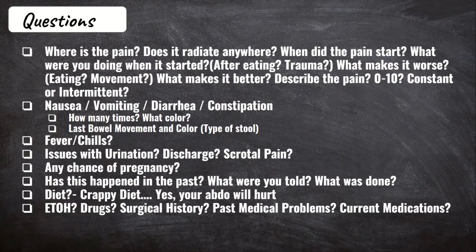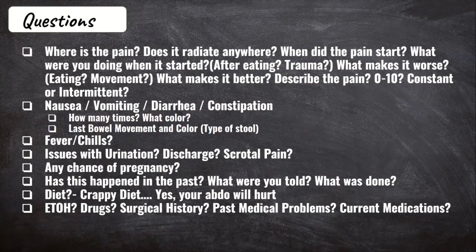Although we are discussing gastrointestinal issues, also ask about problems with urination, as a kidney infection, kidney stone, or UTI can manifest as abdominal pain. Ask your patient if there are any issues with urination, any discharge from their genitalia, or scrotal pain — in men, testicular issues can sometimes first manifest as lower abdominal pain. For women of childbearing age, ask about the possibility of pregnancy and their menstrual cycle: when was the last one, any issues, are they regular or irregular? This helps assess for ectopic pregnancy among other gynecological issues.